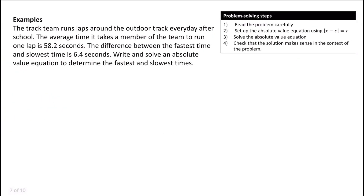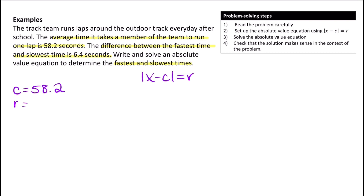The track team runs laps around the outdoor track every day after school. The average time to run one lap is 58.2 seconds. The difference between the fastest and slowest time is 6.4 seconds. Write and solve an absolute value equation to determine the fastest and slowest times. The average value is 58.2 and the range is 6.4, so we get the absolute value of X minus 58.2 equals 6.4.